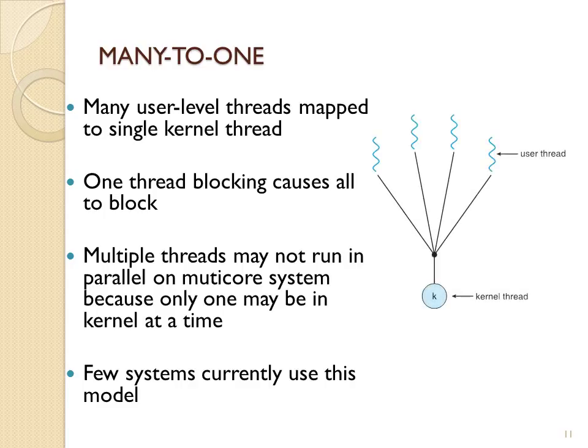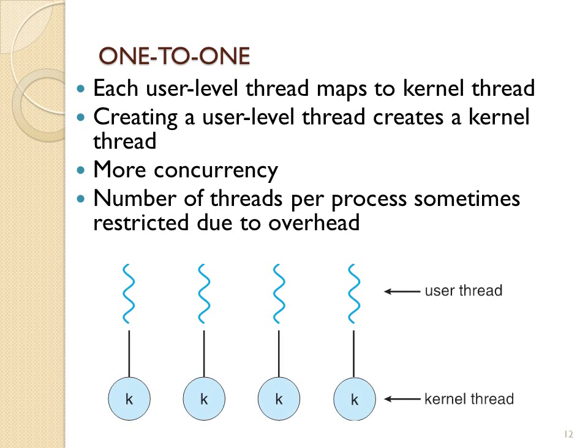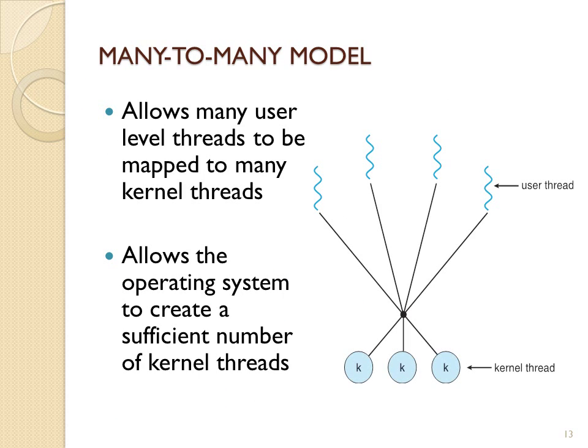Many-to-one: here's a figure of how it works. It does not support full threading, because if one user thread blocks, the entire process is going to block. One-to-one: every time a process creates a thread, it gets a kernel thread and gets resources, but there are only so many resources available per process and per system, so choices need to be made when resources get used up.